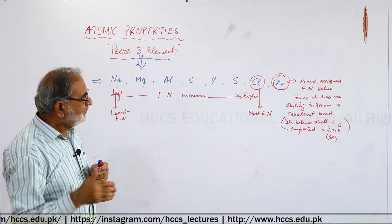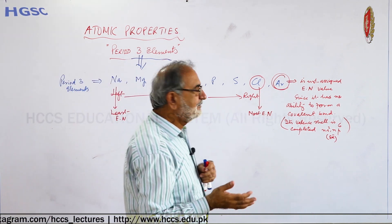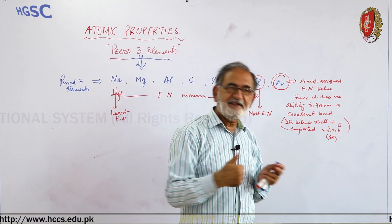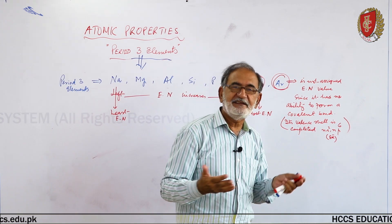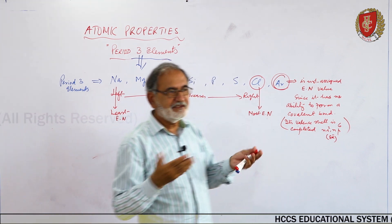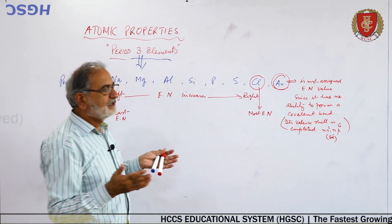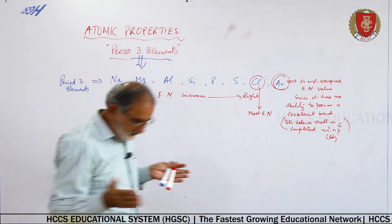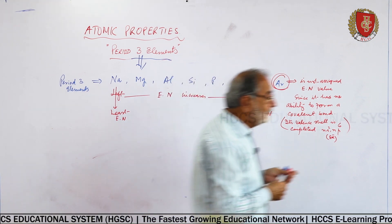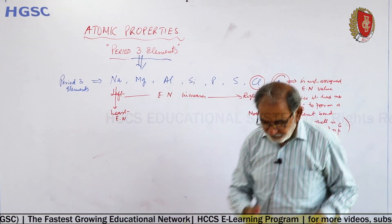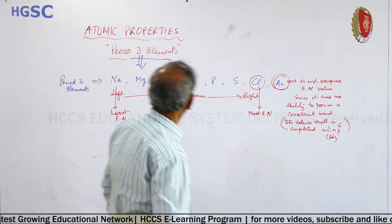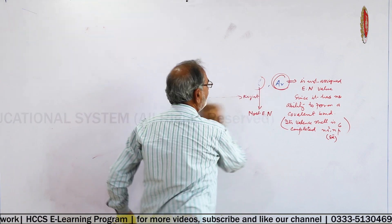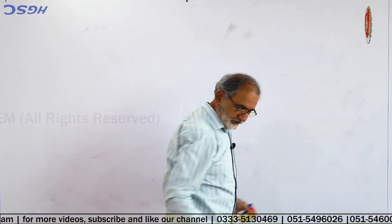Argon has no ability to form a covalent bond, so it will not attract electrons since it does not form any covalent bond. Therefore, we cannot assign an electronegativity value to argon. We do not assign any electronegativity value to noble gases.